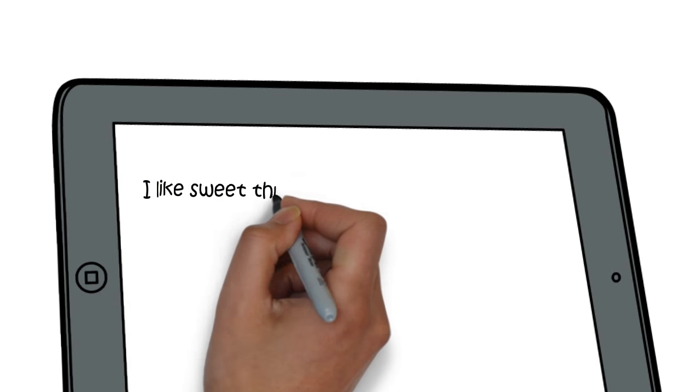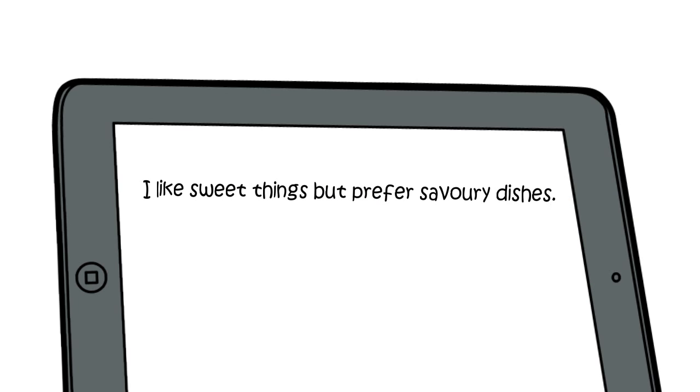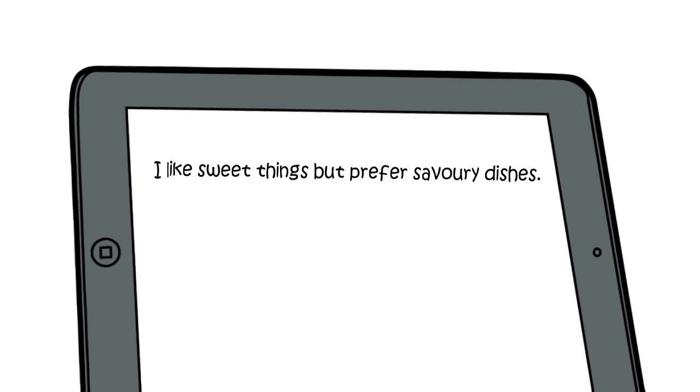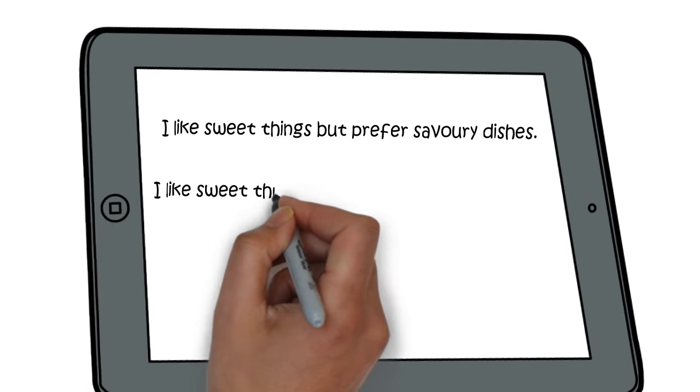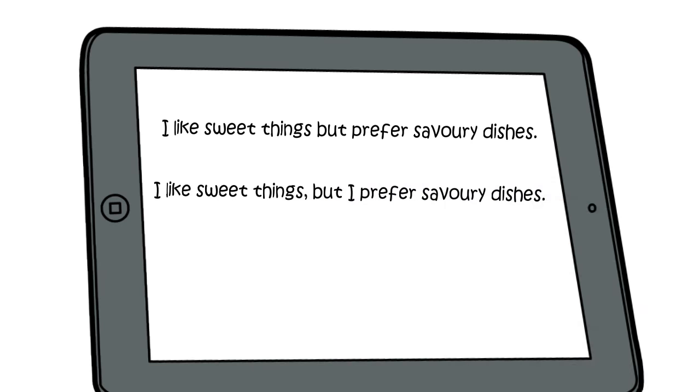Let's go back to our two examples. I like sweet things, but prefer savory dishes. I like sweet things, but I prefer savory dishes. So if you look at the second one, you can see that it's made up of two independent clauses. I like sweet things, I prefer savory dishes. Both of those could be standalone sentences.